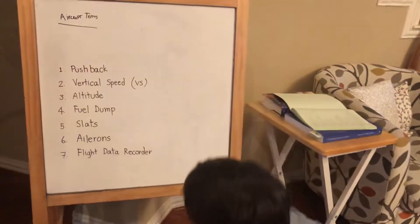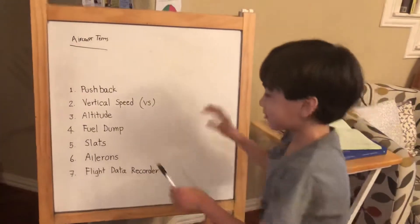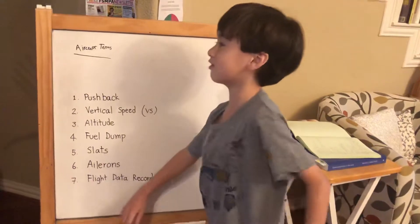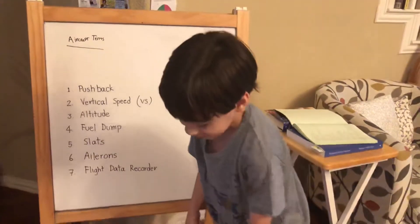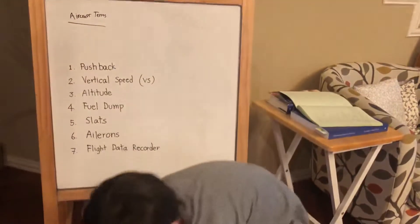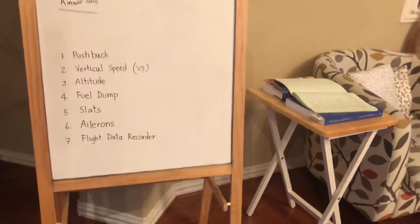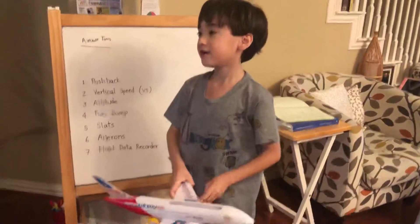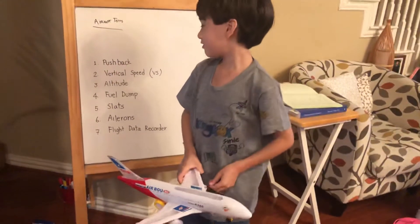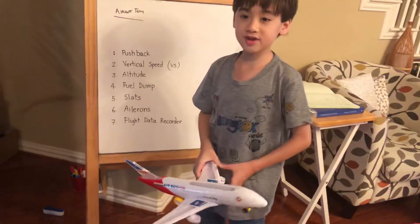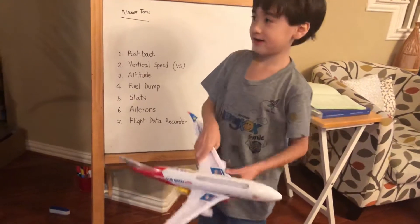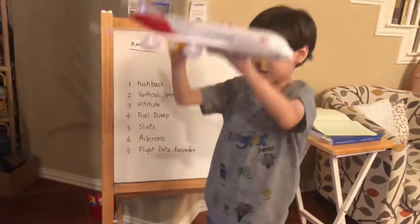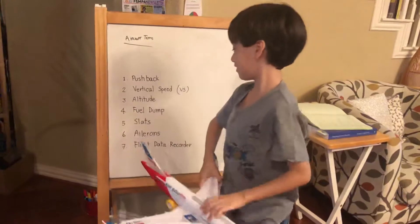Next, we have altitude. Altitude is one of the basic words of aircraft terms. The altitude is how high the plane is up in the air. Let's say the plane has reached an altitude of 16,000 feet — it would be way up there at the clouds, but it's not at cruising altitude yet.